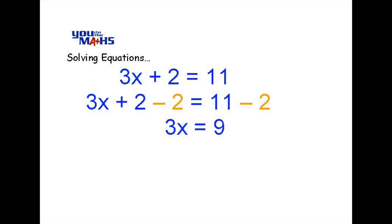Now we need to remove the 3 next to the x so that x is by itself. So the opposite of multiplying by 3 is to divide by 3. That means that we remove 3 on the left hand side and 9 divided by 3 is just 3. So x equals 3 is the solution for that equation.